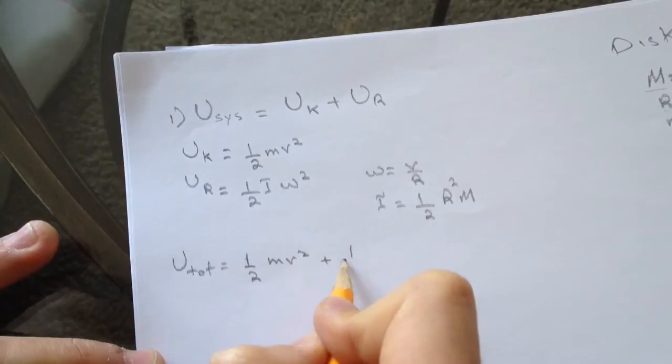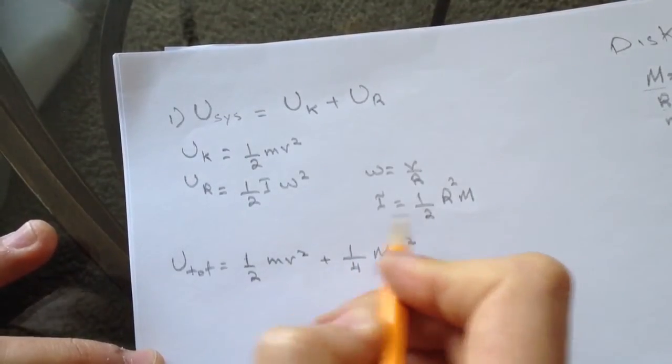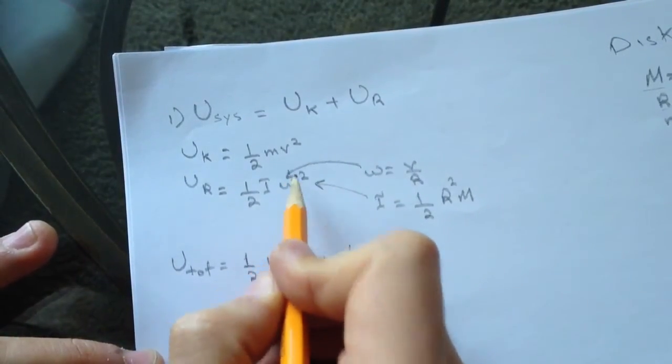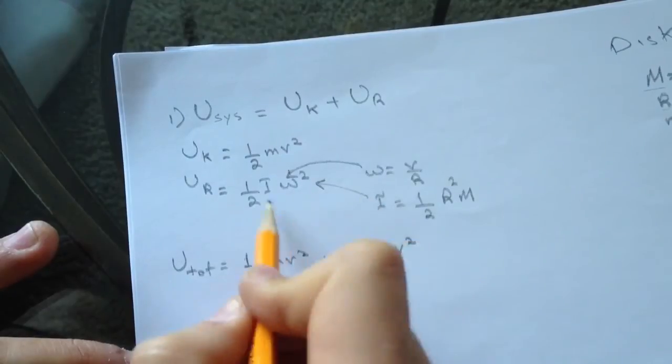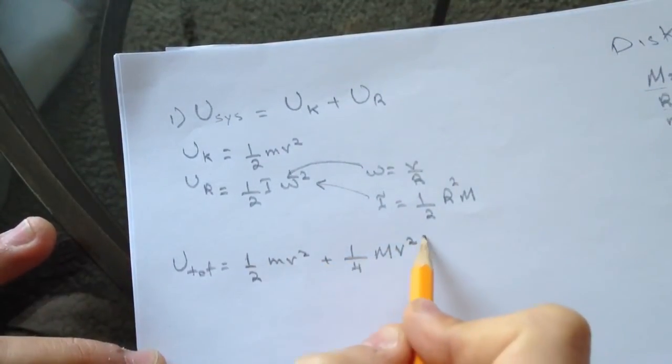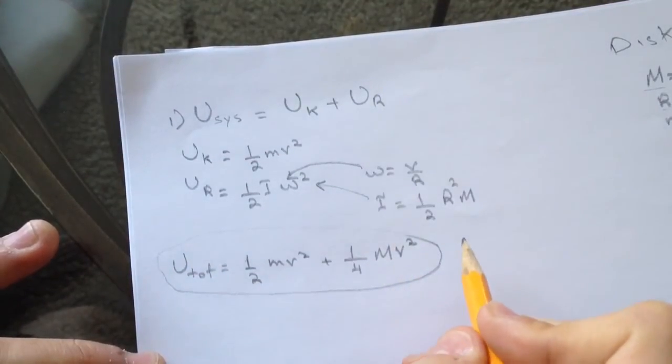When we put the I here and put the omega, the omega will be squared and the r's will cancel, so that's what we end up with. This equation you can use.